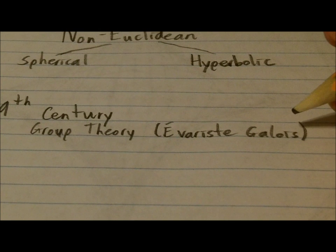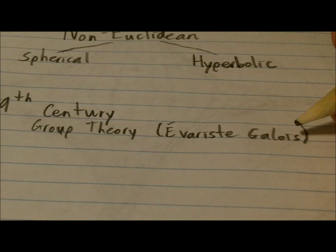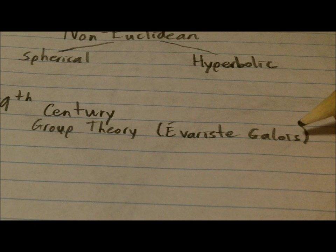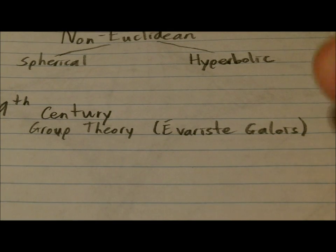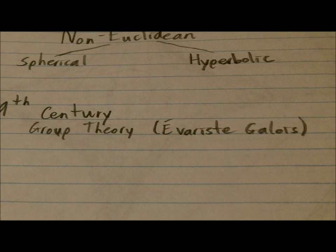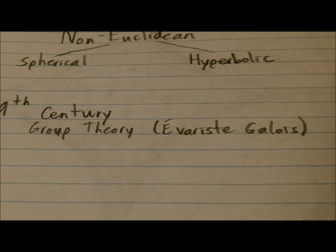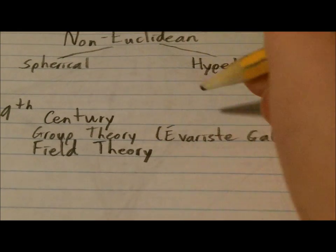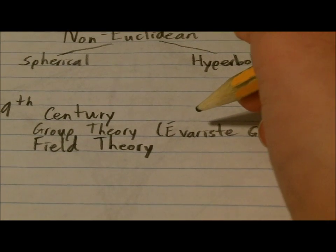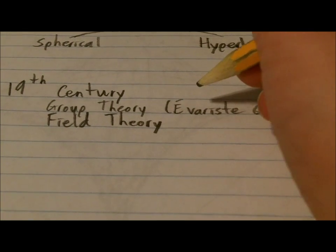So, group theory, Evariste Galois, he's probably my second or third favorite mathematician. He was very influential in developing group theory and the field that is named after him, called Galois theory. Famous, short-lived French mathematician, Galois, fields in mathematics are very useful structures.